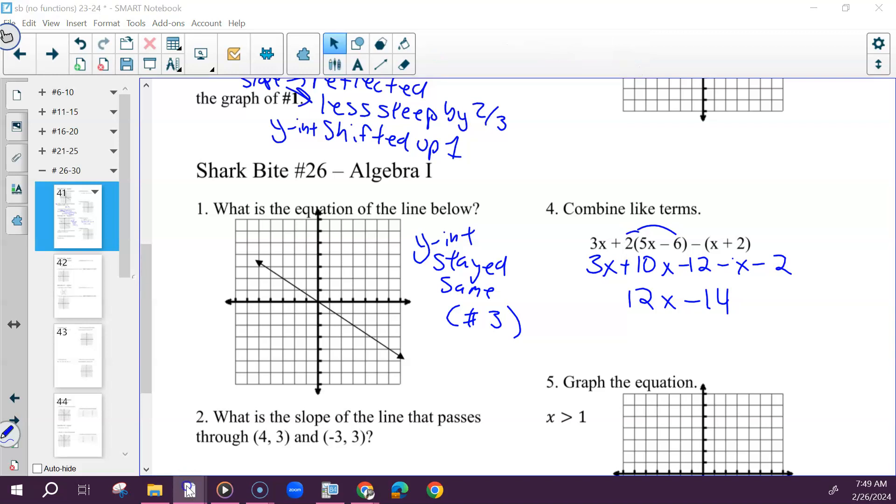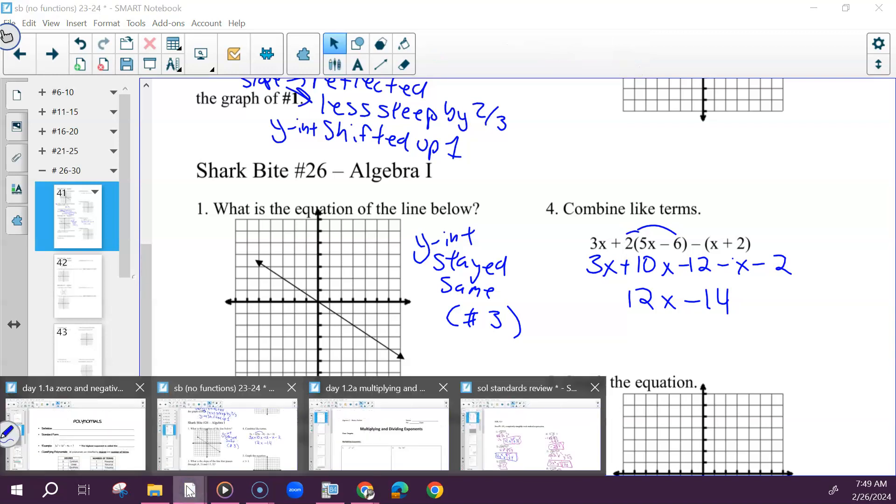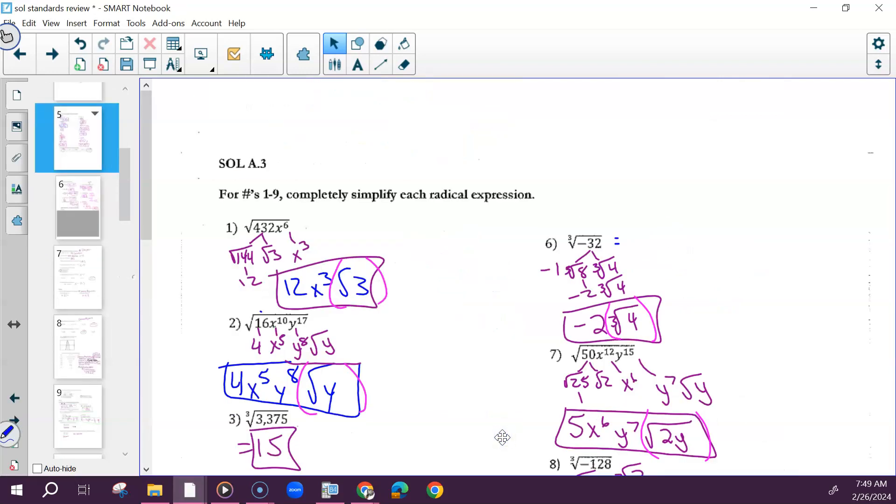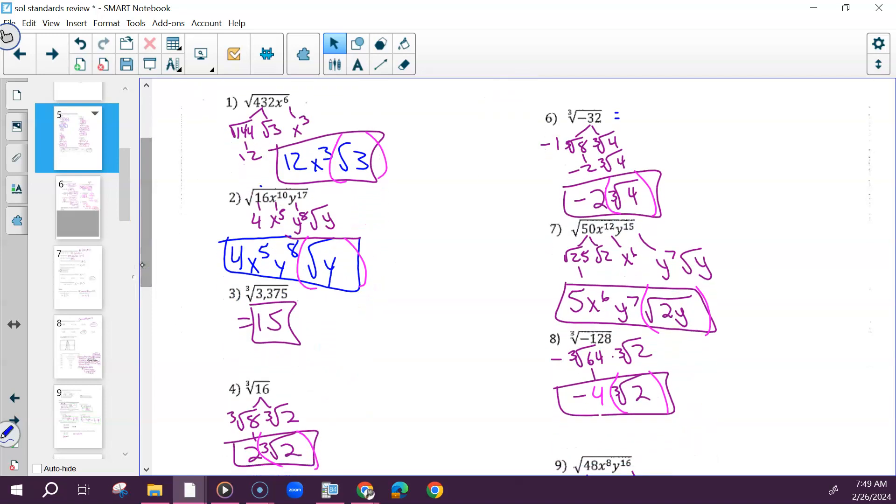Write down these answers for the SOL A3. After this week, go back and double check this. Write down the answers today, but after this week, go back and see, could I do this on my own? And see if you get the same answers. So number one, 12x to the 3rd, you can use the parentheses, you don't have to, times the square root of 3.